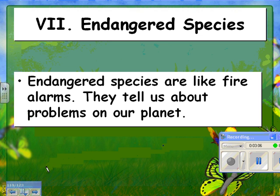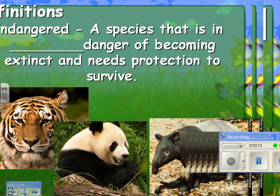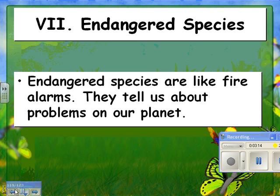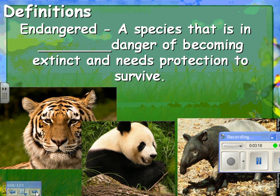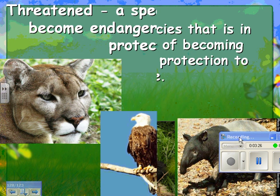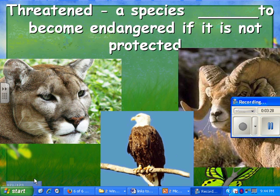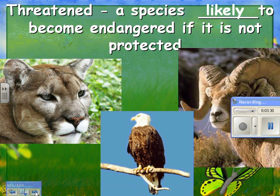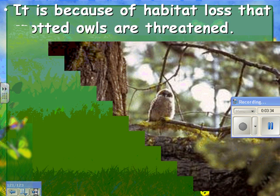We'll end by talking about endangered species, since it relates to habitat destruction and threatened species. Endangered species are like fire alarms — they can tell us about problems on our planet. An endangered species is a species in immediate danger of becoming extinct that needs protection in order to survive. A threatened species is a species likely to become endangered if it's not protected soon.